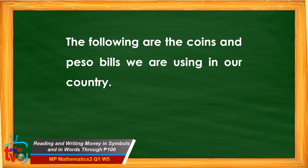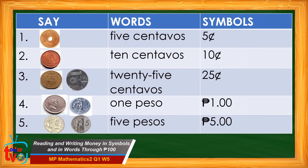The following are the coins and peso bills we are using in our country. In number one, we say five centavos. If we write it in words, we write the words five then centavos. And if we write it in symbols, we write first the amount which is five followed by a centavo sign. We read this as five centavos.